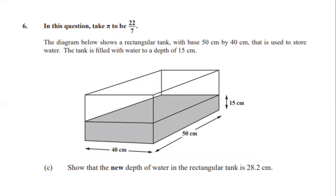Part C says: show that the new depth of water in the rectangular tank is 28.2 cm. Using the rectangular volume formula — volume equals length times width times height — we have our new volume of 56,400 cm³, and the length and width remain 50 by 40. We substitute those into the formula to find the new height.